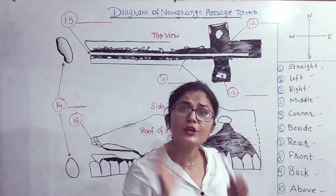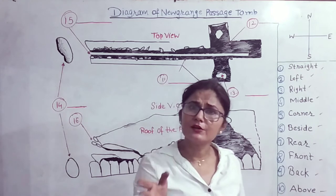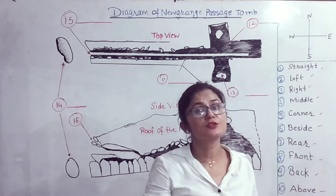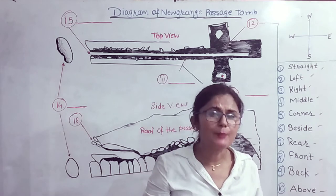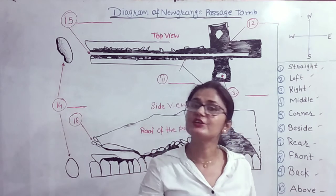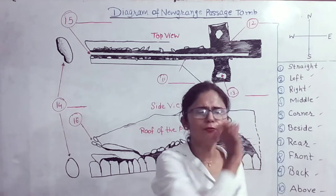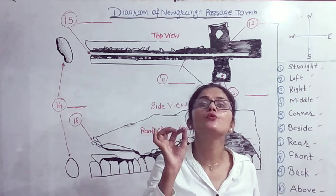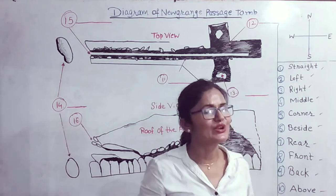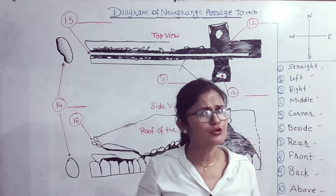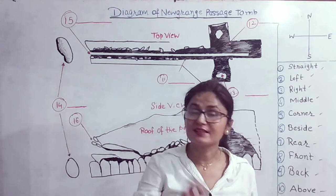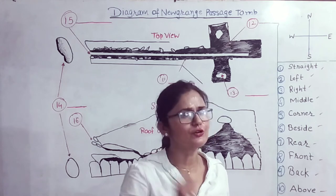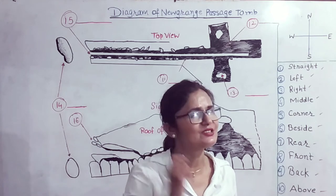Whenever the speaker uses these words — not only in listening but in reading as well — whenever you read these words in your reading passage while solving the labeling diagram or map, just concentrate fully, because the answer is nearby. Take the help of these words and try to solve the map or labeling diagram; it will help you wonderfully. Now I'm going to give you some time to do pre-listening, as I taught you in my previous video on IELTS listening section 4.